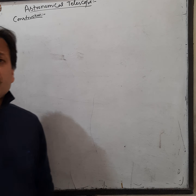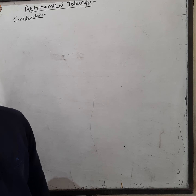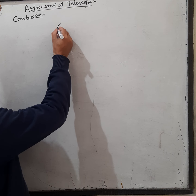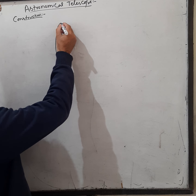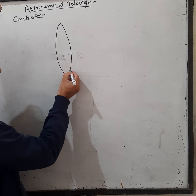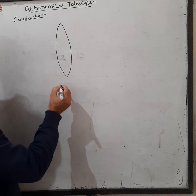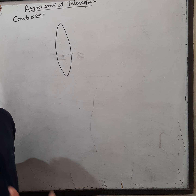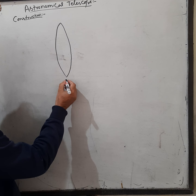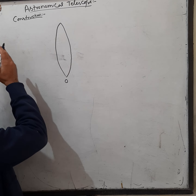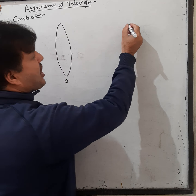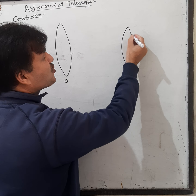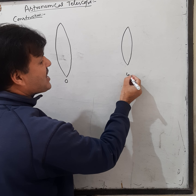Astronomical telescope mainly consists of two convex lenses. One is a convex lens which has large aperture and large focal length — this is the objective lens. The other is a convex lens which has small aperture and small focal length — this is called the eye lens.